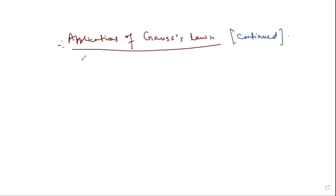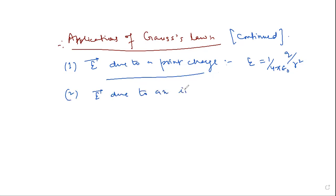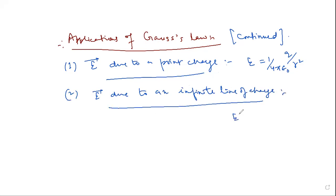So we have done four applications. The first was the electric field due to a point charge. I remind you we proved that it is 1 by 4π epsilon-naught times Q by r-squared, where symbols have their usual meaning.